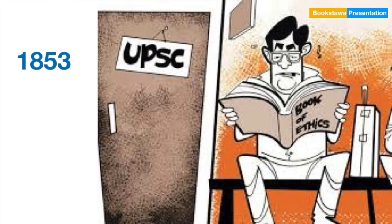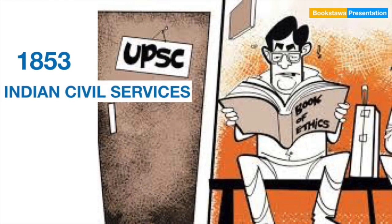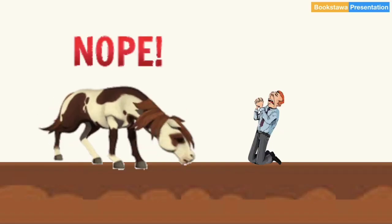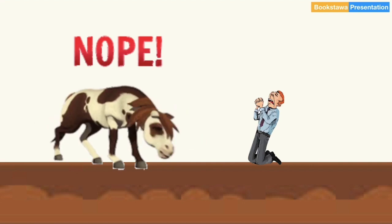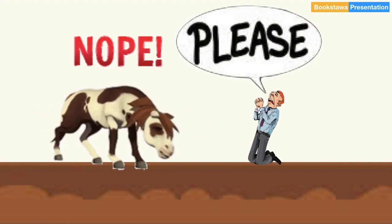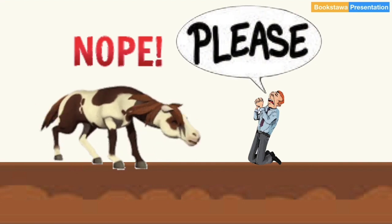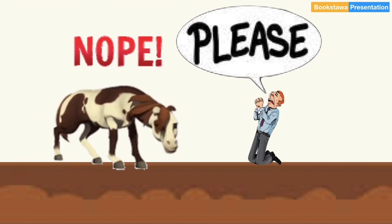The second important reform was that, in 1853, an open competition exam was started for Indian civil services. Before that, civil servants could become the same people who were nominated by the directors of East India Company. So, from 1853, it became necessary to pass the exam to become a civil servant. Its exam used to be held in London only. There is also a fun fact that one of the many exams of civil services was also for horse riding.